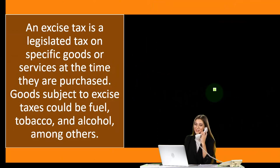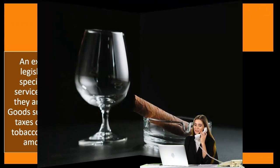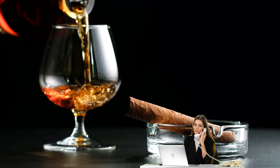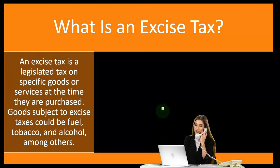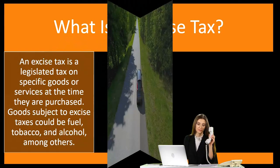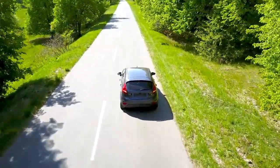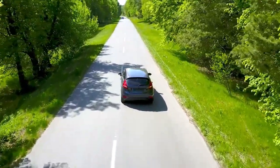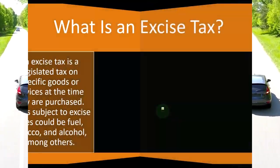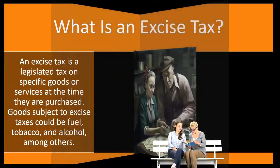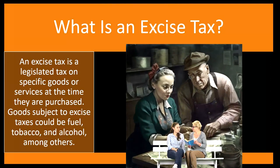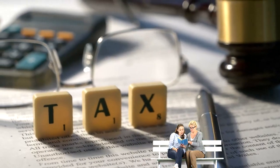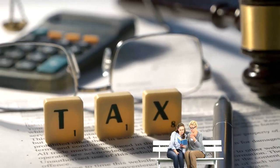You might ask why they would put a tax on a particular item. One reason, for example with fuel, is that you want to apply the tax to the people that might be using a related public good — like the freeway system. The more people buy fuel, the more they're likely using the public good that was built with tax dollars. Therefore, it makes sense to tie those two things together. People that buy more fuel are paying more for the public good, while people that don't buy as much fuel shouldn't be paying as much for that public good — that would be the rationale.